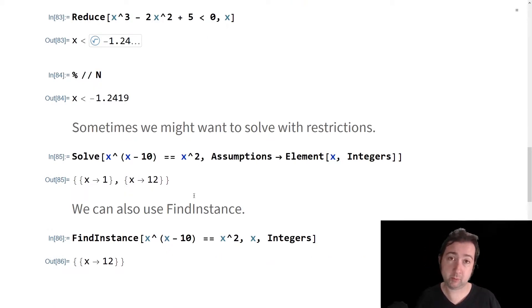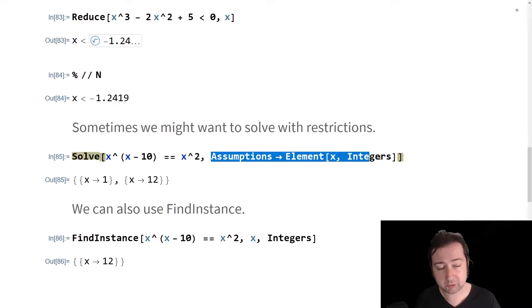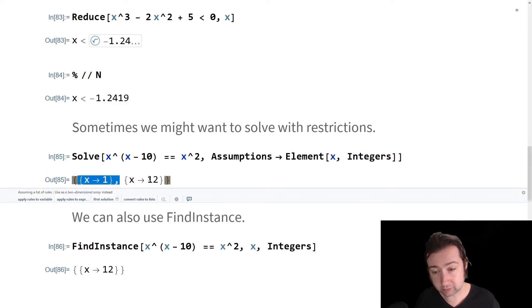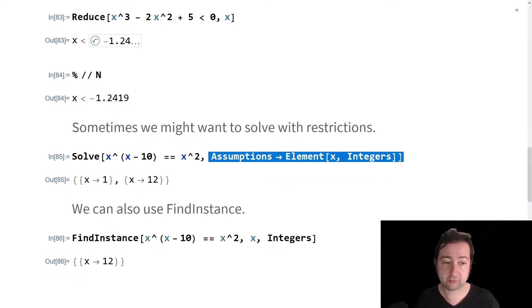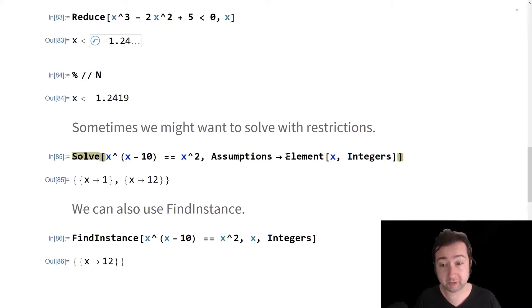One thing that comes up often when we're working on an equation is we want to solve it with assumptions on the nature of the element we're solving for. Sometimes because we're not interested in solutions of another kind, sometimes because we're trying to get the solvers an edge so they work faster. If we solve the equation x to the x minus 10 equals x squared, but we also add the assumption that x is an integer, then we get integer solutions out. If there's multiple assumptions to make, we could say that x is in the integers and also x is greater than two. If we add that extra assumption, you notice we've dropped the x equals one.